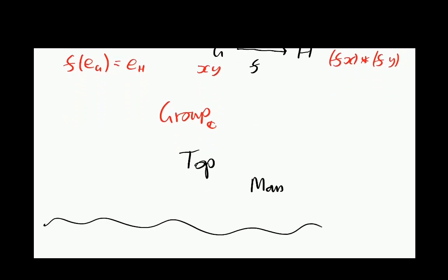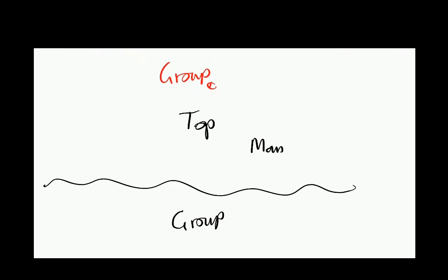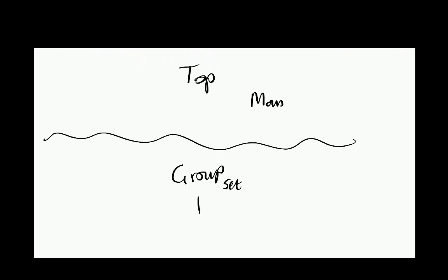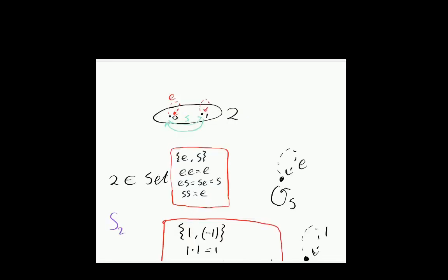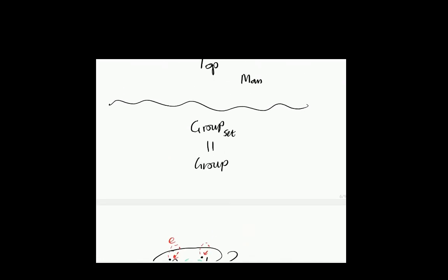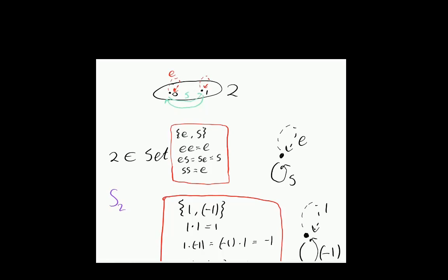We're probably not going to focus very much on internal groups today. I'm mostly going to be thinking about the category of groups that are internal to sets, which is basically just the category of groups. I'm just interested in ordinary groups that have sets of elements, where the multiplication is just a binary operation, the identity is just an element of G, and the homomorphisms are just functions. Let's go back to thinking about the ordinary category of groups.